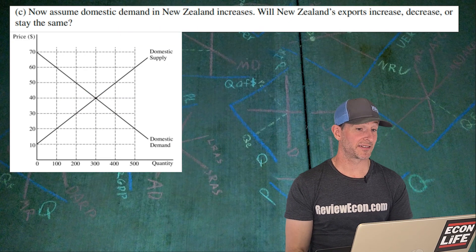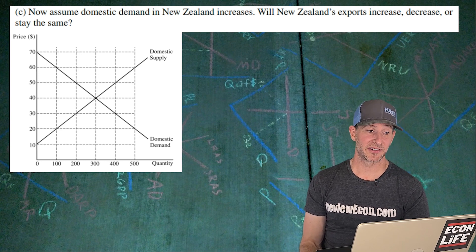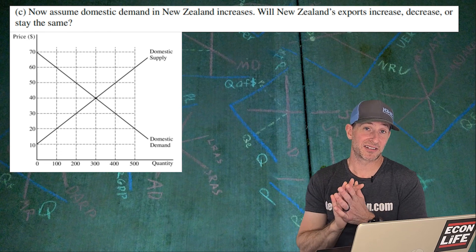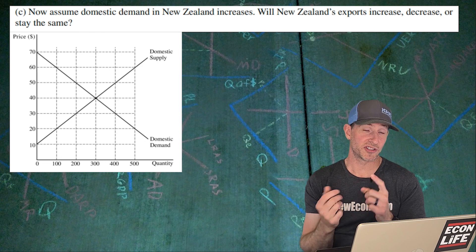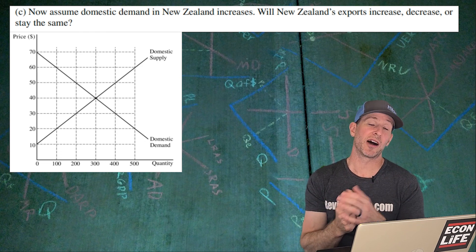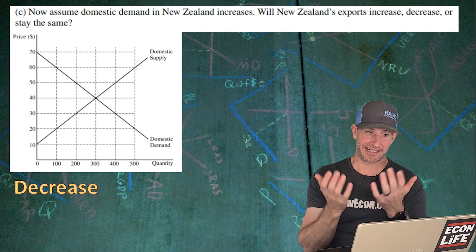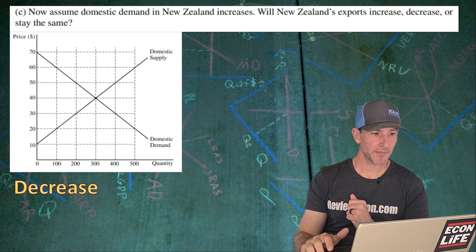There we go. Assume that the domestic demand for New Zealand increases. Will New Zealand's exports increase, decrease, or stay the same? Well, if we shifted that demand curve to the right, we would actually see the price obviously wouldn't change. The quantity produced domestically would not change, but we would see a greater quantity consumed. So it would decrease. It would just export less, consume more within the economy.